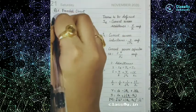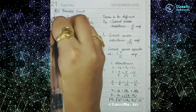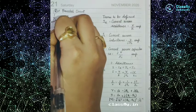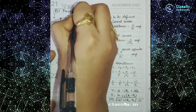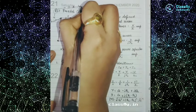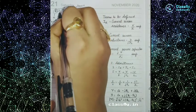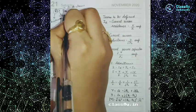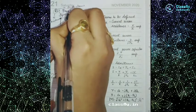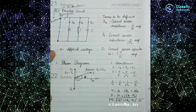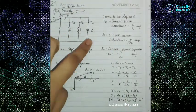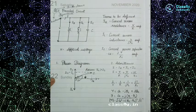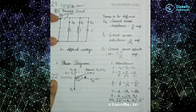R is our resistance, L is our inductance, and C is our capacitance. So R, L, and C — that is resistance, inductance, and capacitor — will be connected in a parallel circuit.